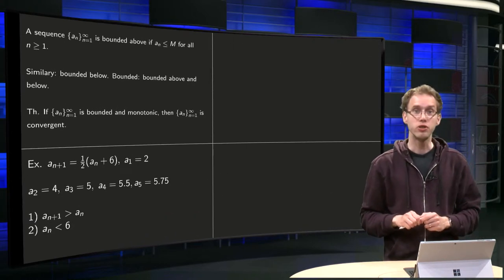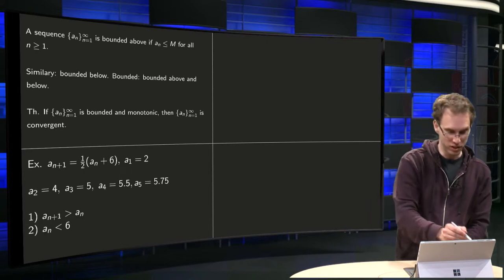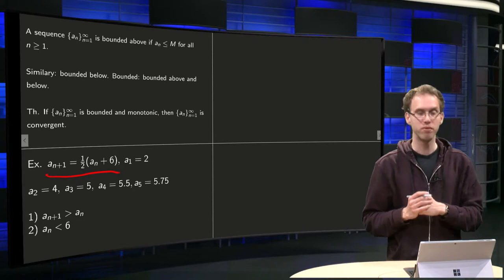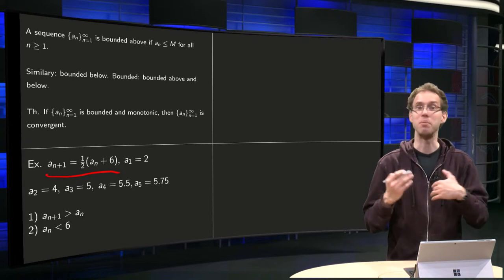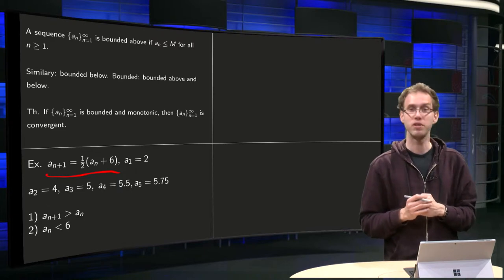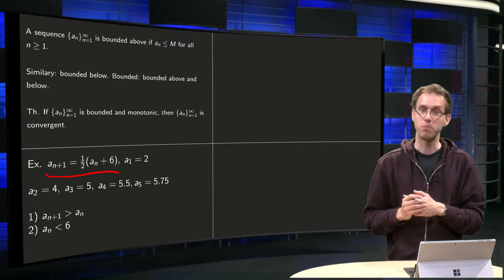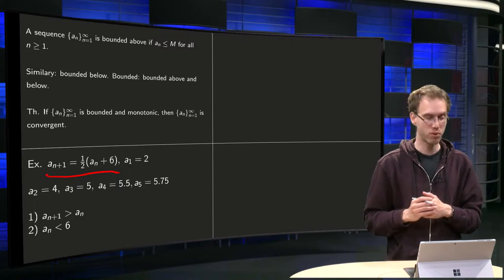Now let's do some examples where we use that. We use recursive definitions. an+1 = 1/2(an + 6). So what happens? Let's just plug in some numbers to see what's going to happen. We start with a1 = 2. Then the second number equals 1/2(2) + 6 = 1/2(8) = 4.